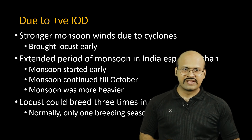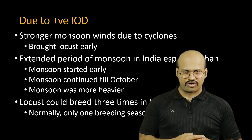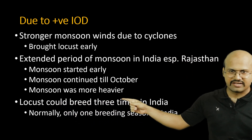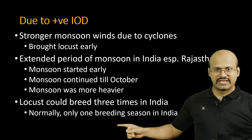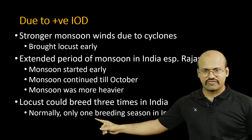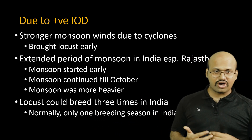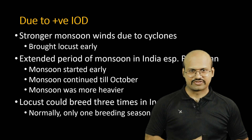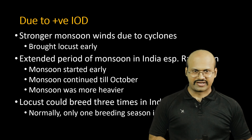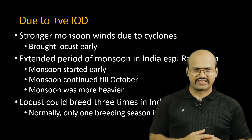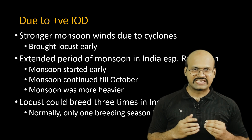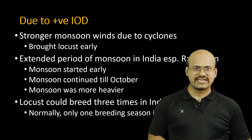Because of all these factors, a very favorable climate was available to the locusts in India as well. They arrived early and were able to breed and multiply within the Indian subcontinent. Normally, locusts spend only one breeding season in India, but due to the strong positive IOD conditions, they were able to complete three breeding seasons in India, multiplying their population significantly and causing a record increase in swarm attacks.